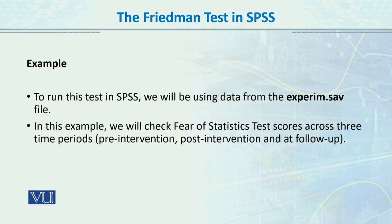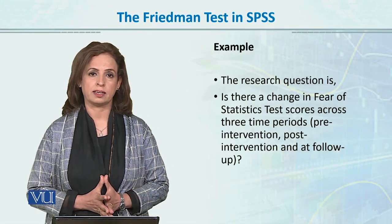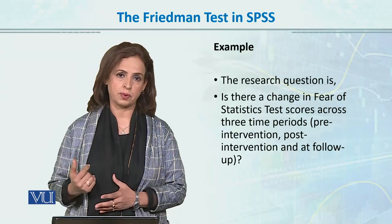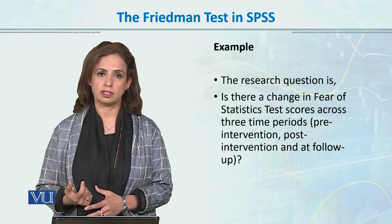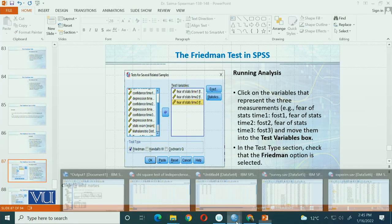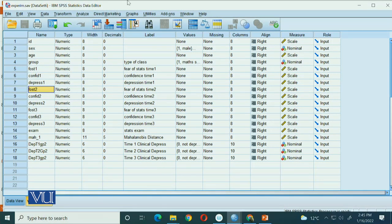In the experiment file, our first example is the fear of statistics. In that example, we have fear of statistics test scores across three time periods: pre-intervention, post-intervention, and follow-up. Our research question is whether the fear of statistics was reduced over the time period — after intervention and after follow-up — or not. We have opened the experiment data and now we will go through it.